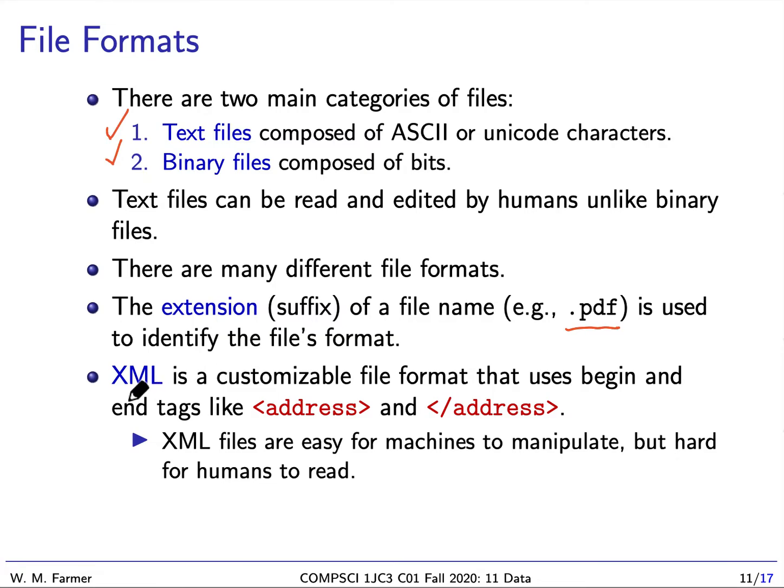And there's one important file format that we should mention which is XML. XML is a file format where there are end tags that start with something in angle brackets and end with something in angle brackets but there's a forward slash at the beginning. So for instance if we had these two tags in between these tags would be an address. Now XML is very convenient for machines, for computers to manipulate, but it's very hard for humans to read.